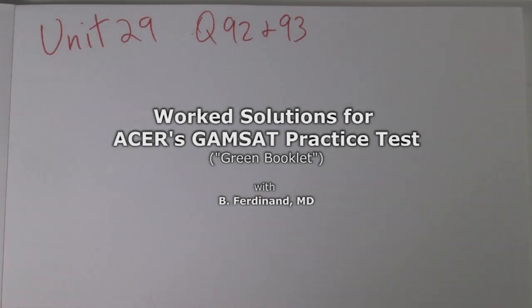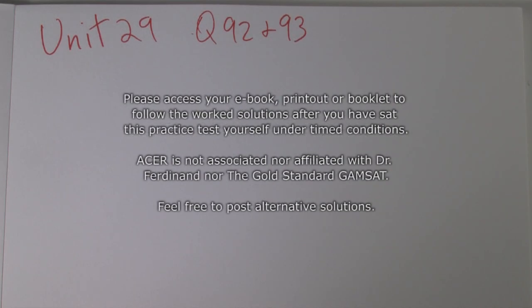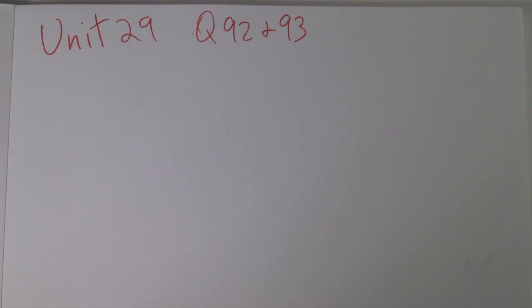Unit 29, questions 92 and 93. This has to do with KSP, solubility products, which refer to solids that are in solution and are sparingly soluble. They are not very soluble.